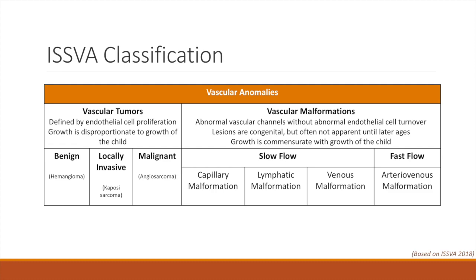Throughout this talk, we are going to focus on benign vascular tumors, or specifically hemangiomas, as these are by far the most common vascular tumor in children. The second category of vascular anomalies is vascular malformations. Unlike vascular tumors, these are abnormal vascular channels that do not have any abnormal cellular proliferation or mitoses on histology. Because these lesions do not have abnormal cellular proliferation, the growth of these lesions will be in proportion to the growth of the child.